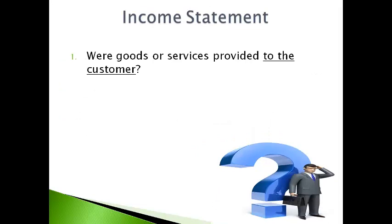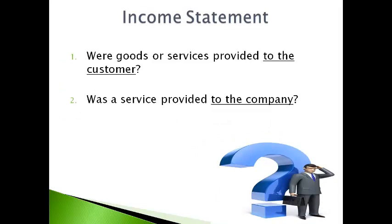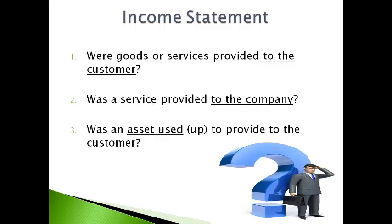The accounting equation must always stay in balance with each transaction. The income statement reports what the company provides to customers, the cost of services received, and the cost of using assets. The answer to these three questions will tell you what changes on the income statement with each transaction. Answer the question using the common name of the account that describes what changed.